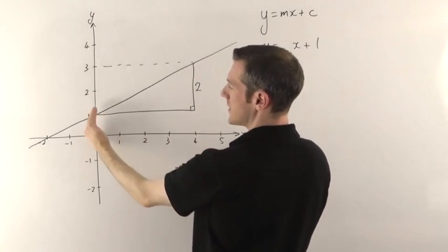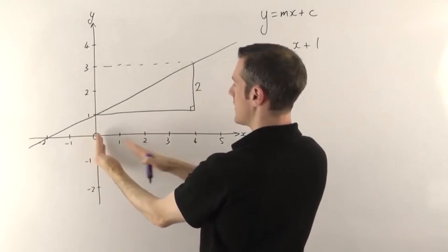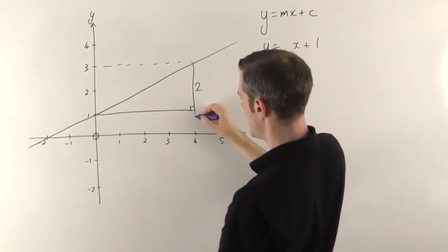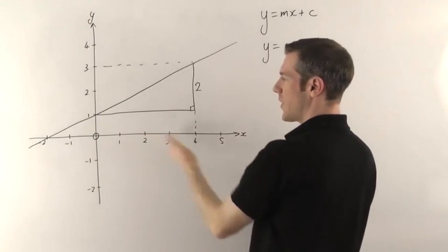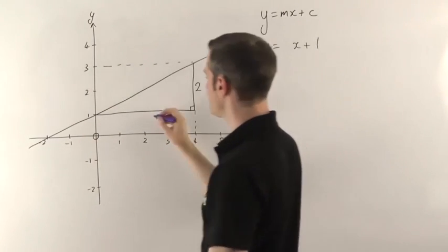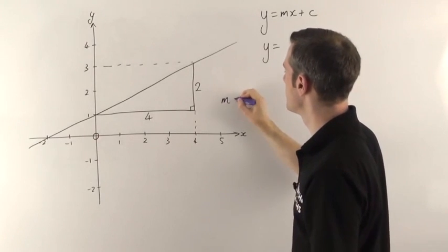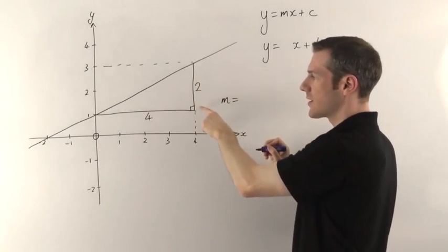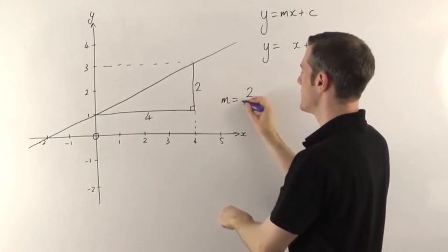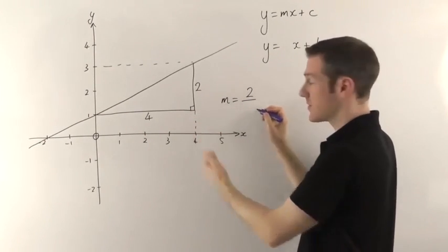The width of the triangle—well it starts off at 0 at the origin here and it goes all the way across to 4, I think. So that means the width of this triangle would be 4. So the gradient m is the height of the triangle, 2, divided by the width of the triangle, which is 4.